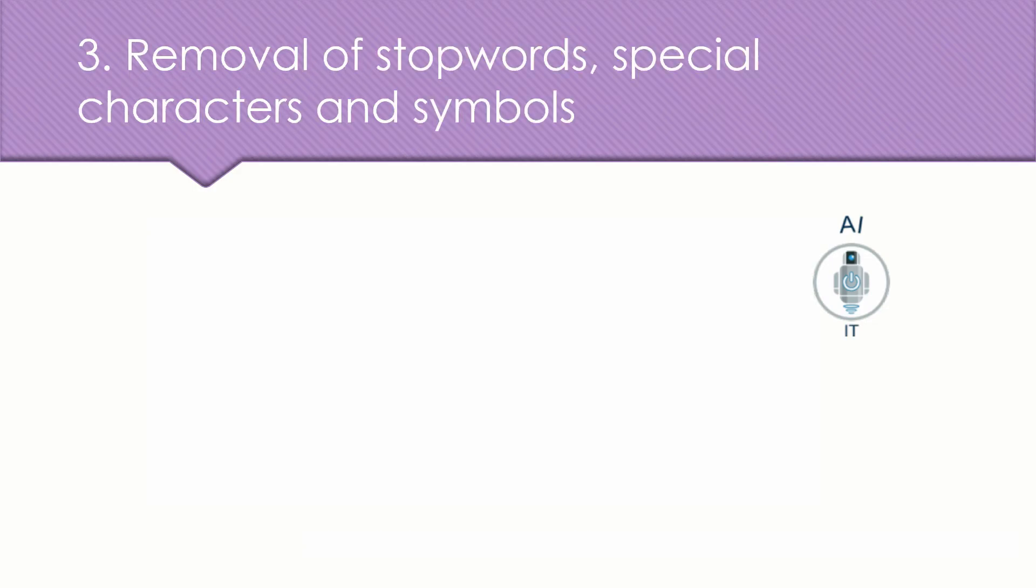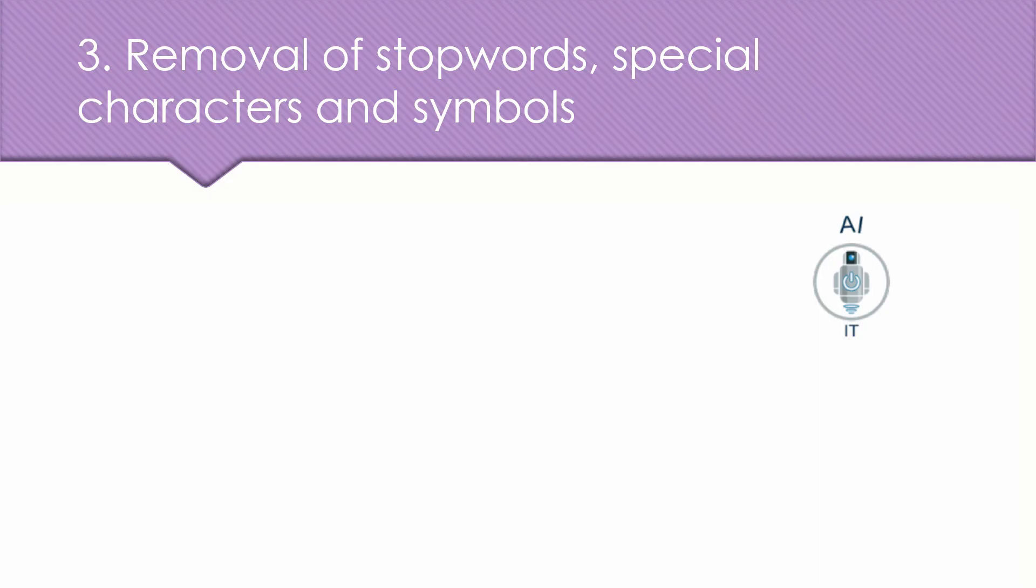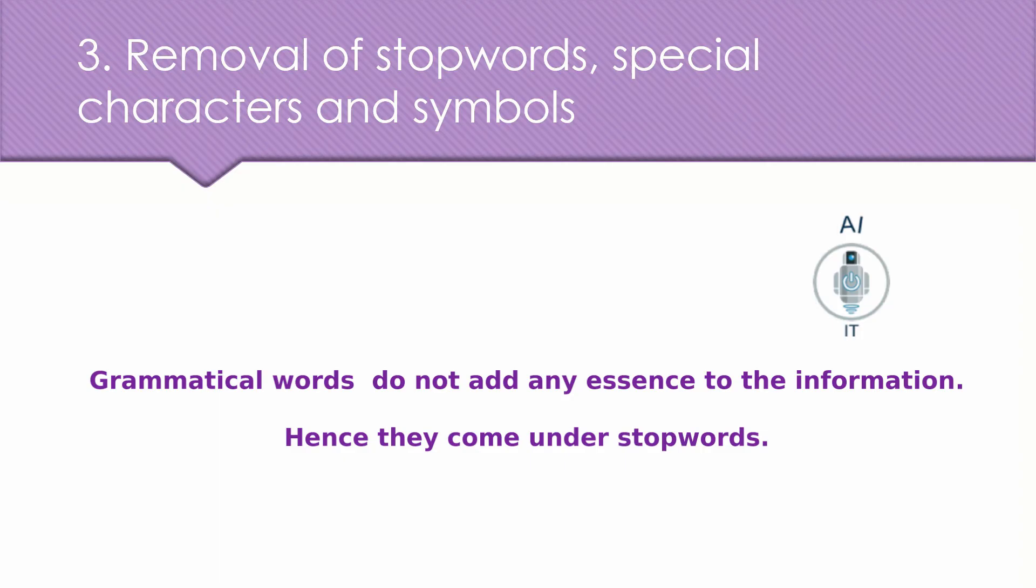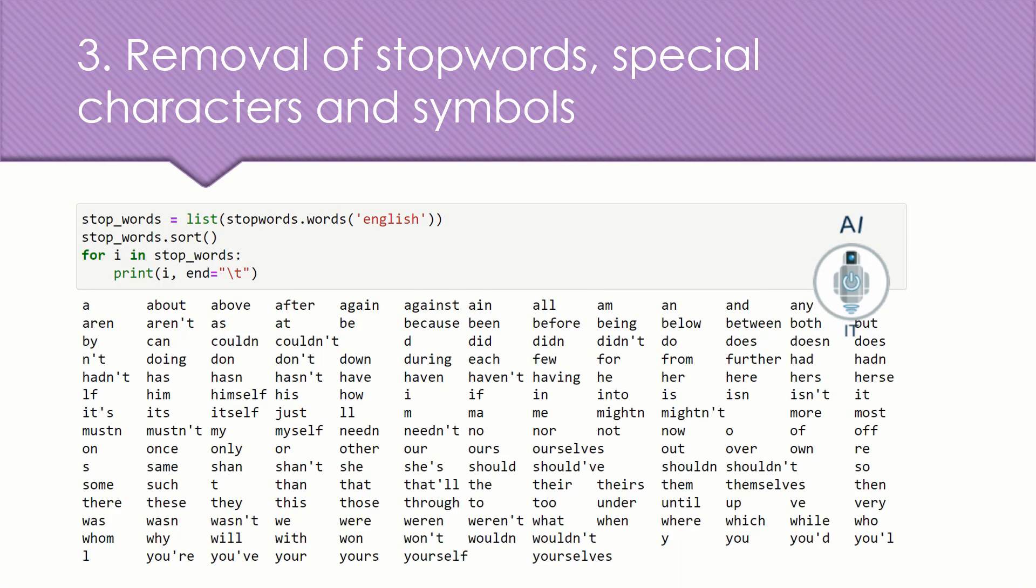Now let us understand the third step which is the removal of stop words, special characters and numbers. Now, stop words are the words which occur frequently in the corpus but has no meaning to it. We humans use grammar to make the sentence meaningful for the person to understand. But grammatical words do not add any essence to the information that is to be transmitted. Hence, they come under stop words. If you import the natural language toolkit library and you type in the program which is given here on the screen, you will get the list of stop words. Now, these words occur the most in any given corpus but carries no meaning. So such words can be easily removed.